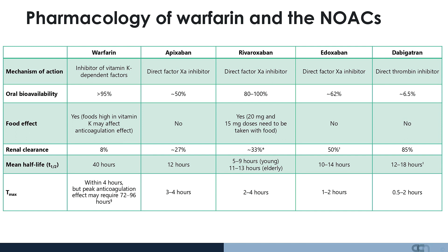Dabigatran is a direct thrombin inhibitor. Its oral bioavailability is rather low at 6.5% because it is a pro-drug that is converted into its active form. There is no significant food interaction, but it is significantly renally cleared and so cannot be used in patients with advancing renal disease.